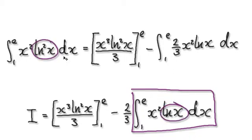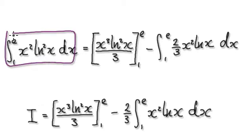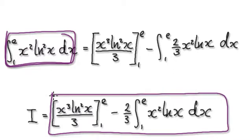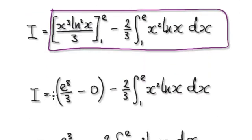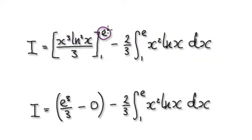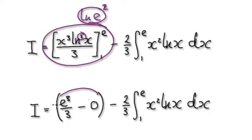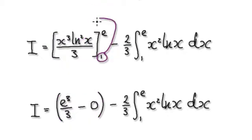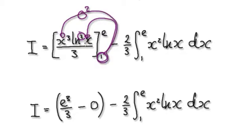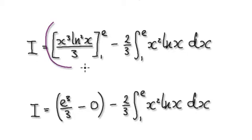We still need to evaluate this simpler integral. Now evaluate: plug x = e in — natural log of e is 1, so 1 squared is 1. Then plug in x = 1 — natural log of 1 is 0, so 0 squared is 0, and that entire term disappears.